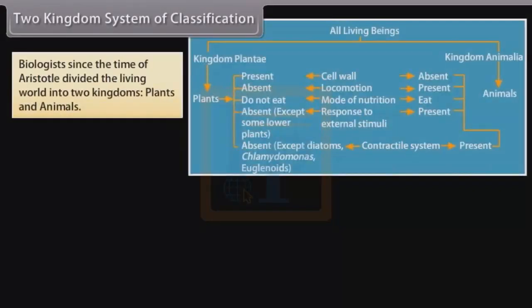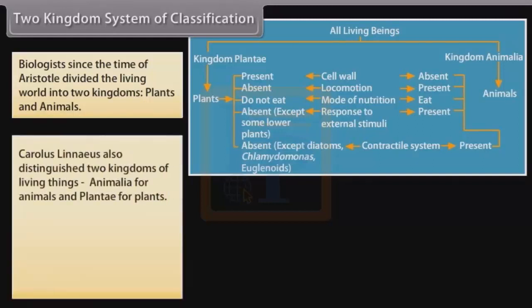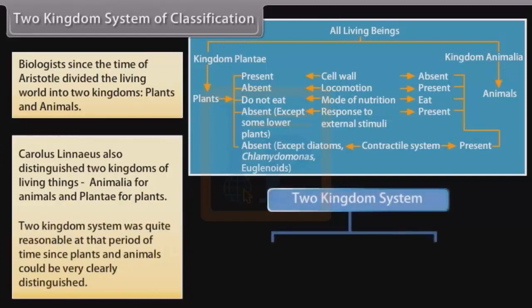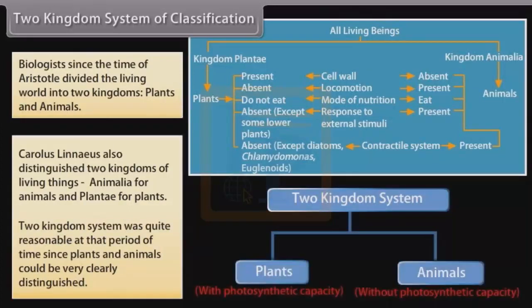Two Kingdoms System of Classification: Biologists since the time of Aristotle divided the living world into two kingdoms — Plants and Animals. Carolus Linnaeus also distinguished two kingdoms of living things: Animalia for animals and Plantae for plants. This two kingdoms system was quite reasonable at that time, since plants and animals could be very clearly distinguished.